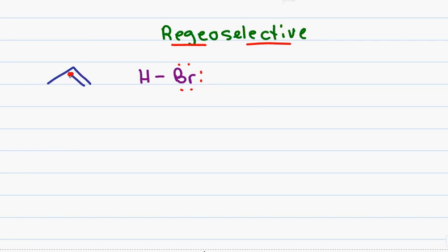The pi electrons will reach out and grab the partially positive hydrogen, causing the electrons holding the hydrogen to bromine to collapse onto bromine. I have two options now with how I form my intermediates. I have a propane molecule for each one. The question is, do I put the hydrogen on the end giving me a carbocation in the middle? Or do I put the hydrogen in the middle giving me a carbocation on the end?